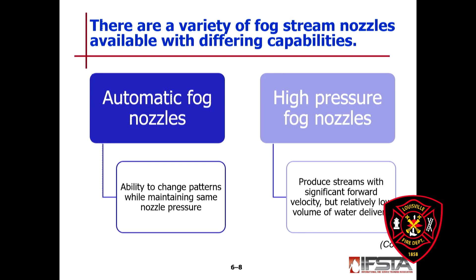There are a variety of fog stream nozzles available — including the automatic fog nozzle and the high pressure fog nozzle. With the automatic fog nozzle, you can change patterns while maintaining the same nozzle pressure. As you increase the pressure, the orifice at the end of the nozzle opens wider to compensate and maintain the same nozzle pressure.